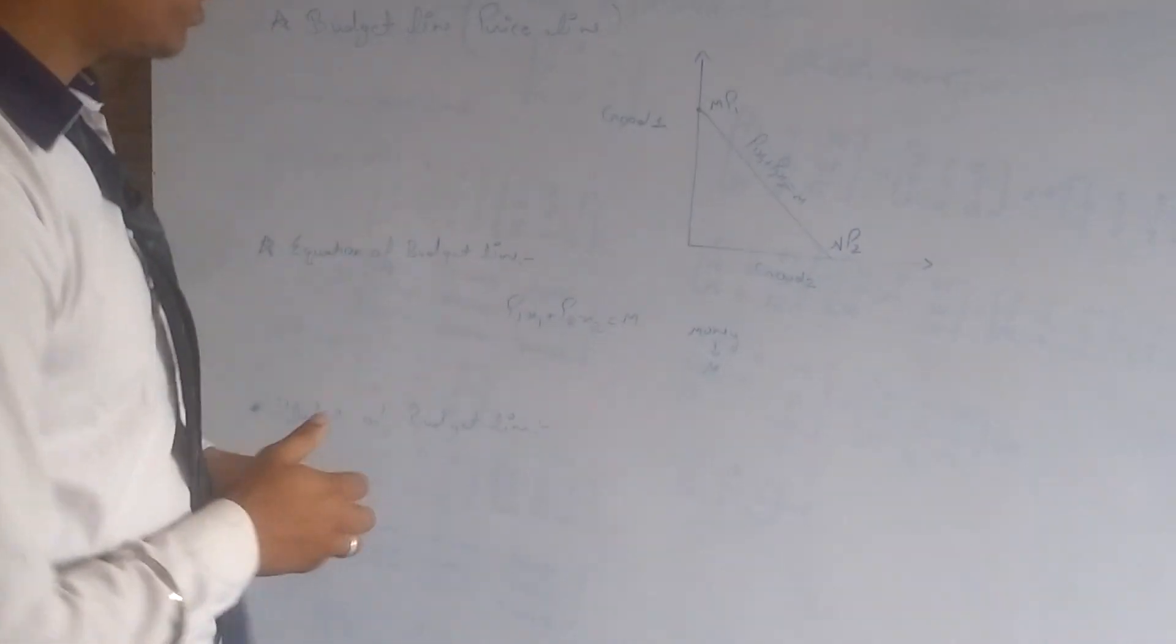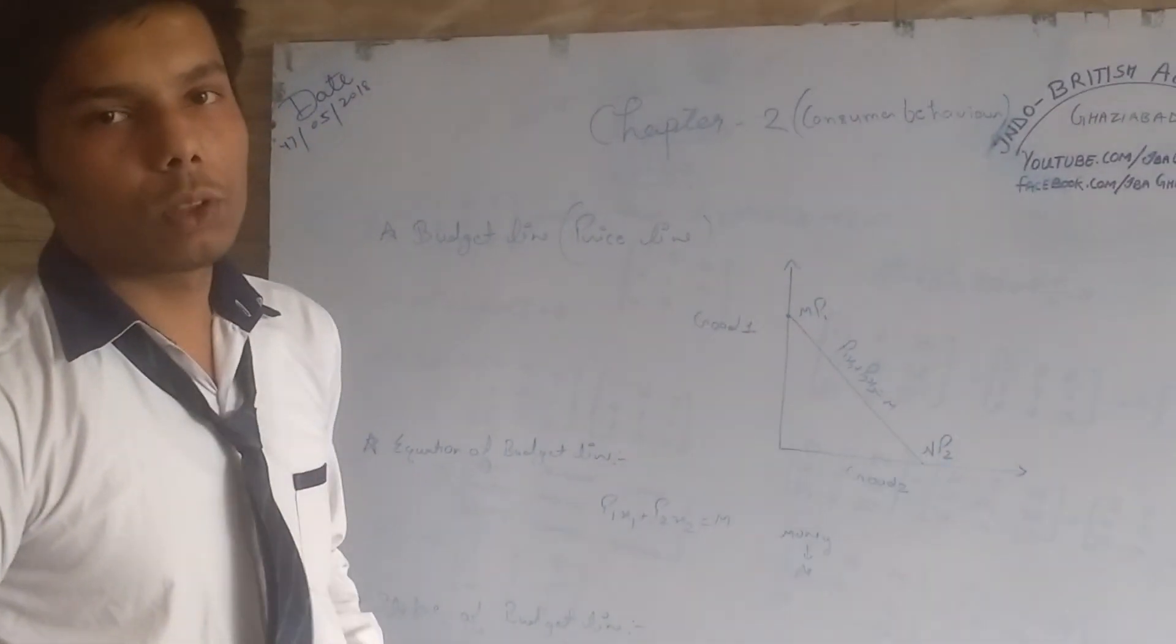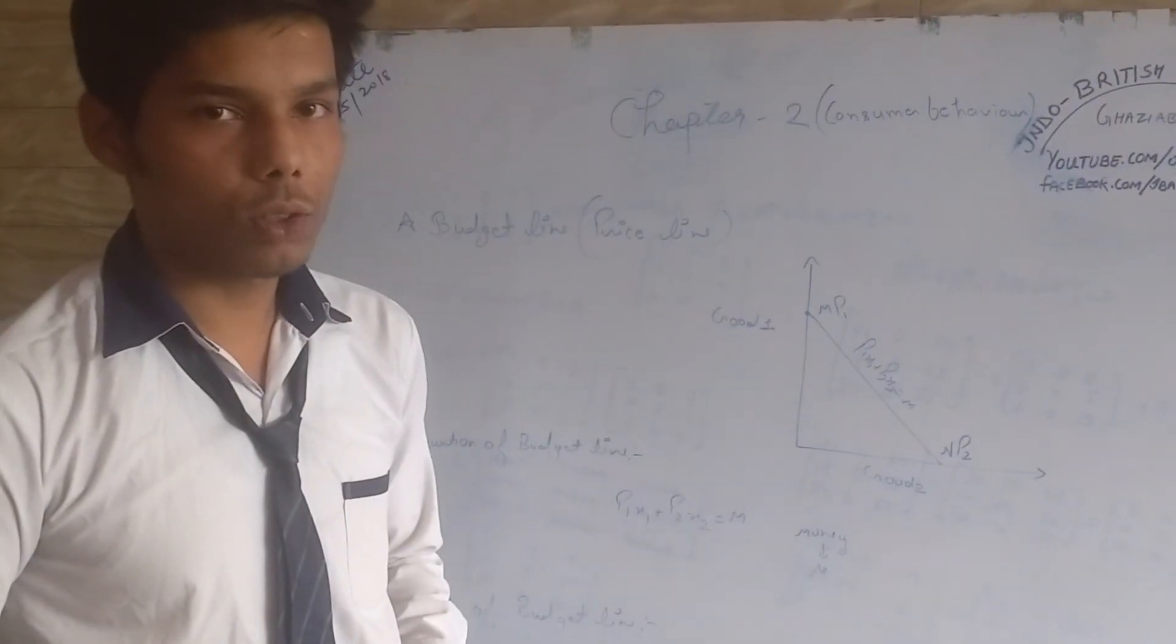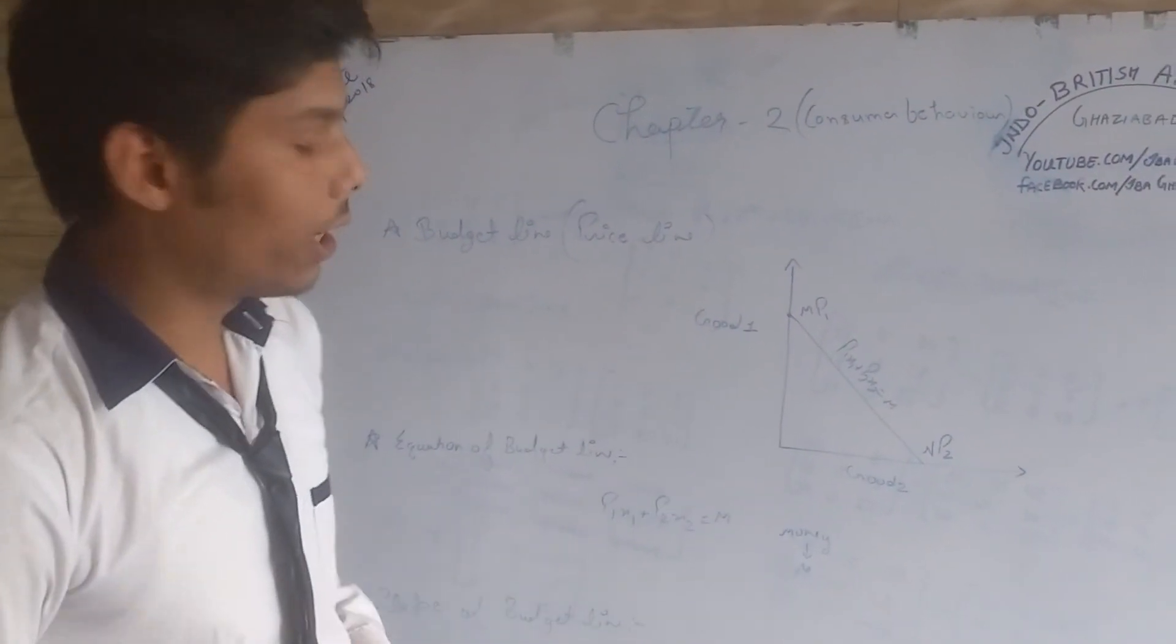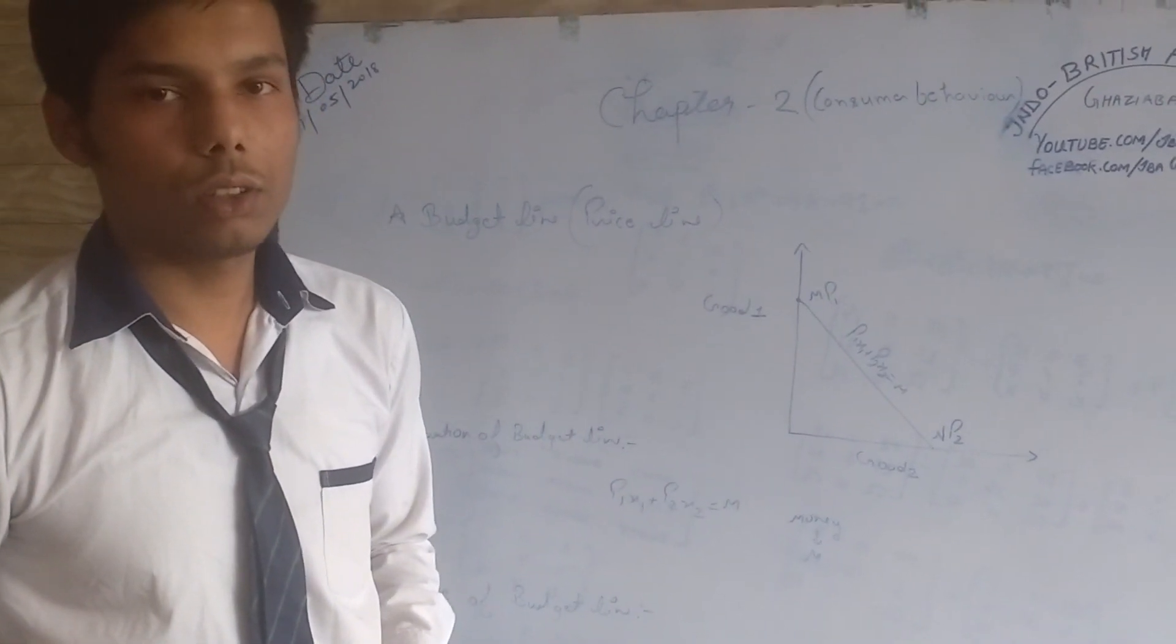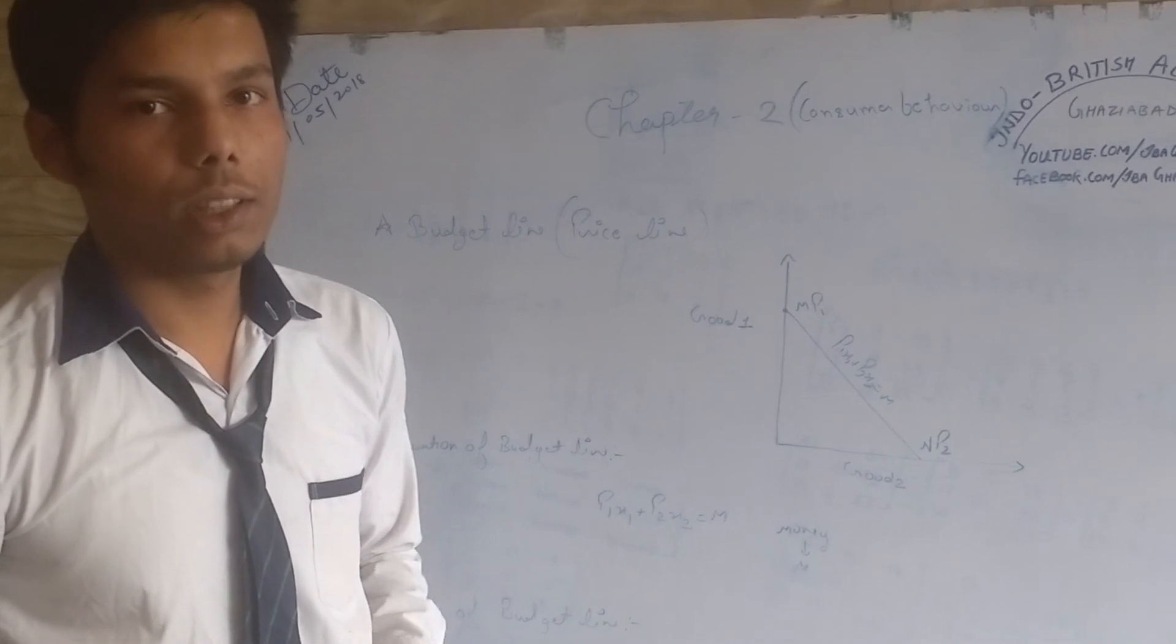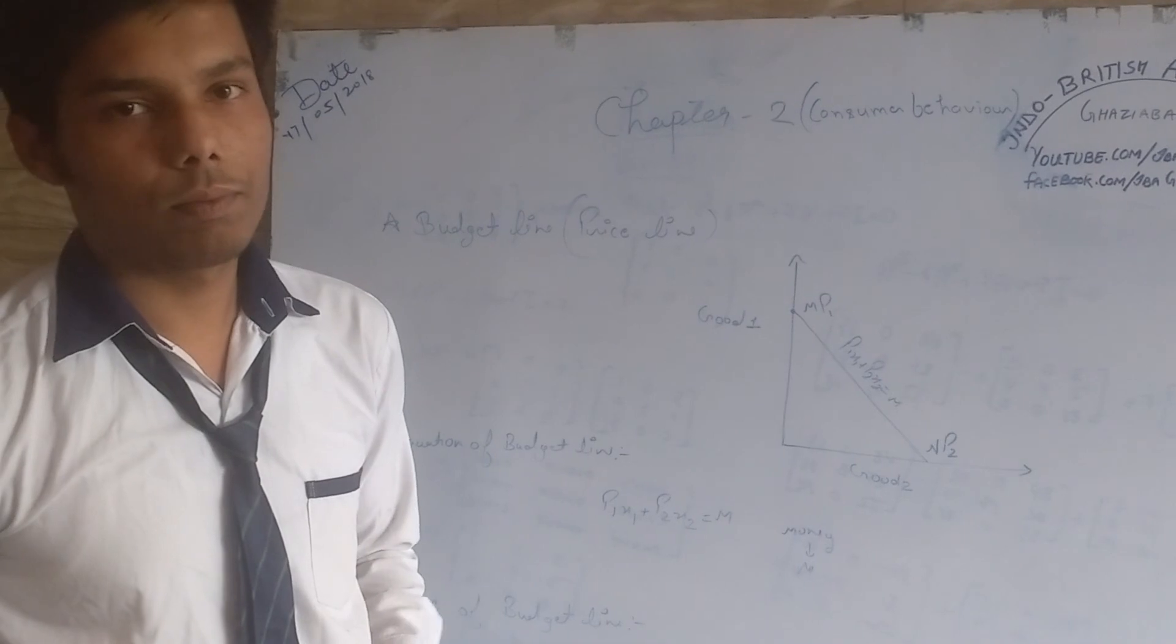First, it is defined as the ratio of price to goods. Second, it is a negative slope, left to right. Third, it is a straight line, the consumption of two goods. This straight line is because it is the combination of two goods.